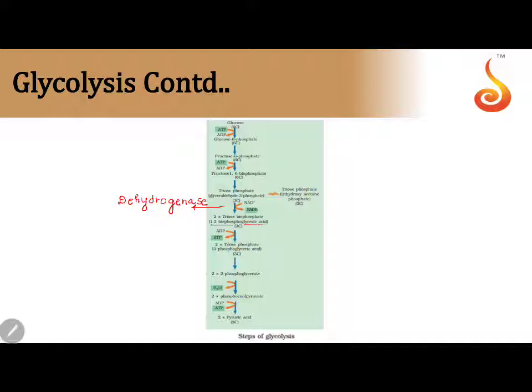In the next step, a phosphate is released from the first carbon. ADP gets a phosphate and is converted to ATP. If we take out or give a phosphate, that is kinase. So here it is phosphoglycerate kinase, as the substrate is phosphoglyceric acid.